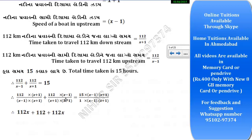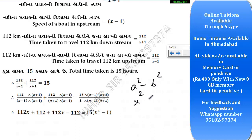Now solving: 1.2/(x+1) + 1.2/(x-1) = 15. We multiply through, using the identity a² minus b² where a equals x and b equals 1, giving x² minus 1 in the denominator. So 1.2(x−1) + 1.2(x+1) = 15(x²−1).